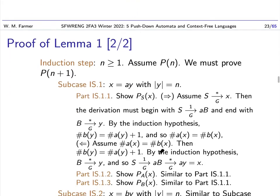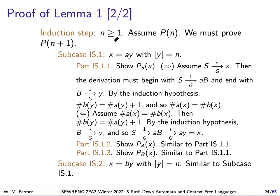Induction step: assume n is greater than or equal to 1 and the property holds at n. We must show it holds at n+1. We're dealing with a string of length n+1, which can start with A or start with B, leaving a suffix of length n. We have to show P_S(x), P_A(x), and P_B(x) hold — and it turns out these proofs are all similar, so we'll just show P_S(x) holds.